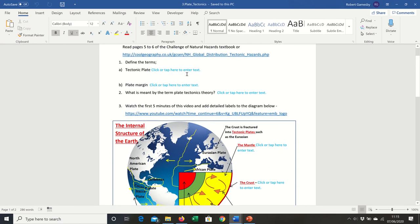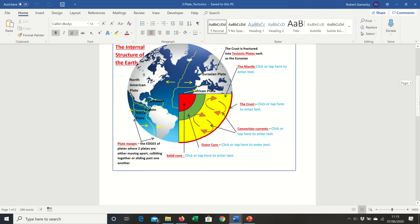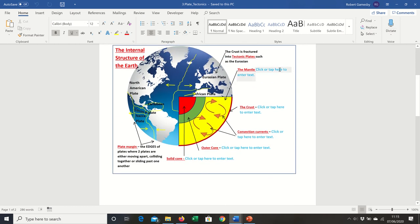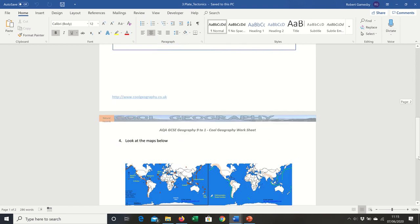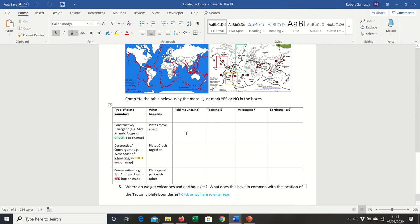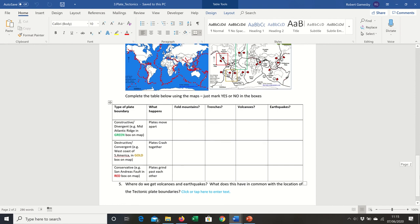There's the gaps for putting in your definitions of tectonic plates and there's the diagram for you to complete and label. You can see where it says click here to tap the text. Then use the maps: do we get fold mountains on constructive margins? You can have a look in the green box here on the map. Do we get trenches on the destructive margin? Do we get them on the conservative?